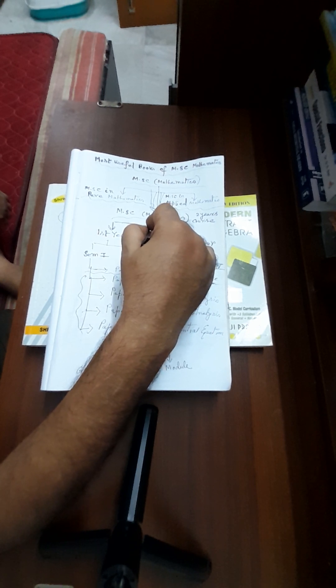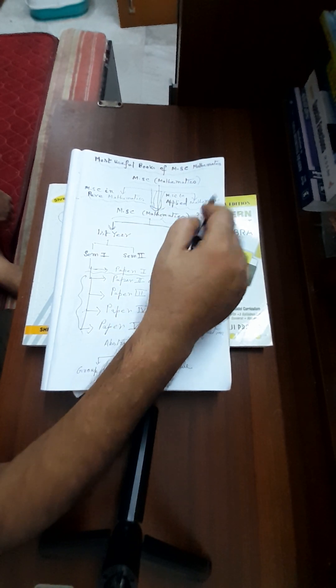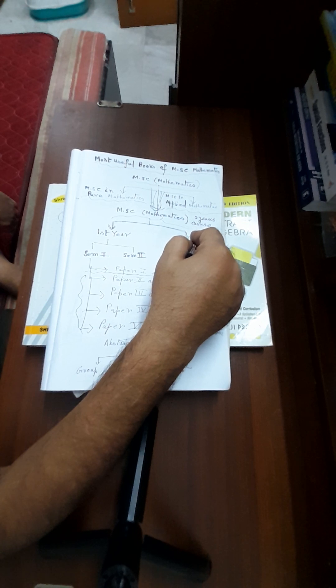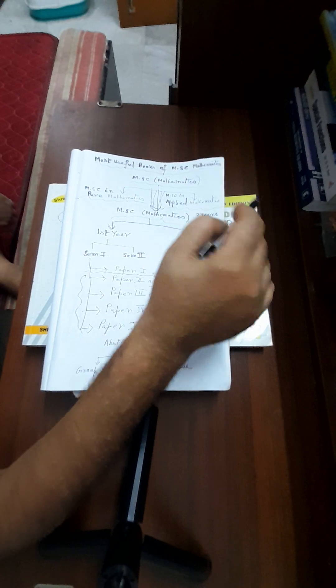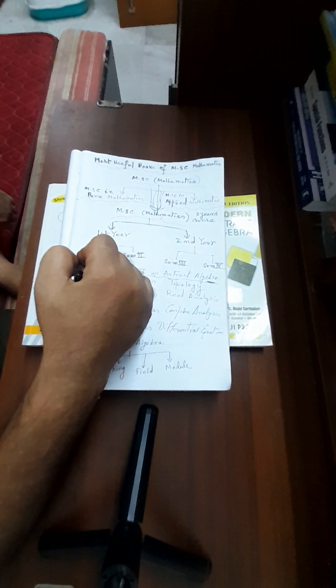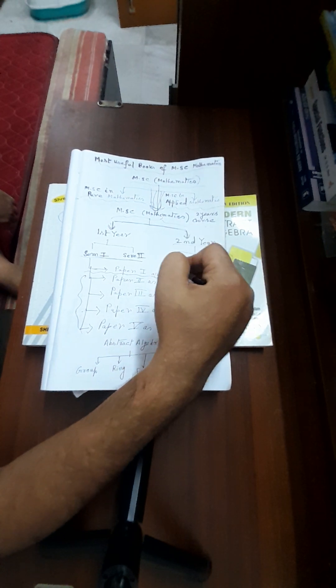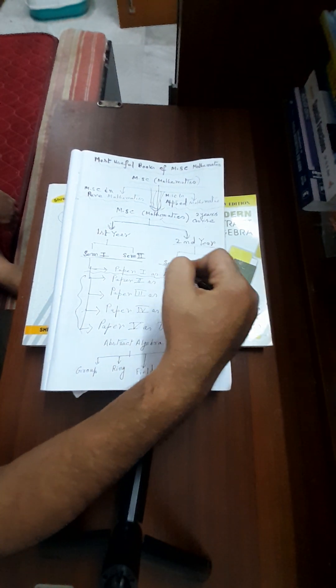The MSc in Mathematics course is a two-year course. Nowadays, 99% of universities have a semester system for the MSc course in Mathematics. MSc Mathematics consists of four semesters — each year contains two semesters. First year has semester 1 and 2, and second year has semester 3 and 4.